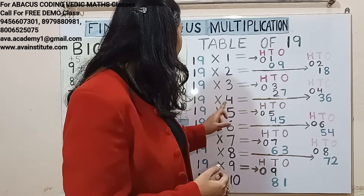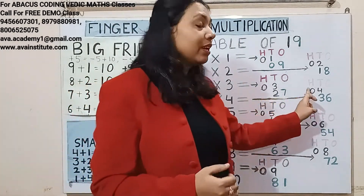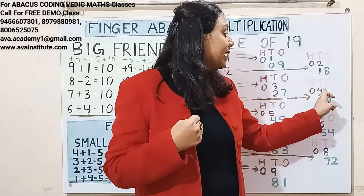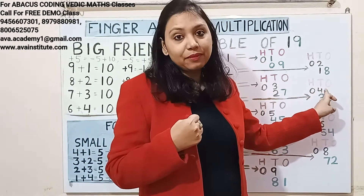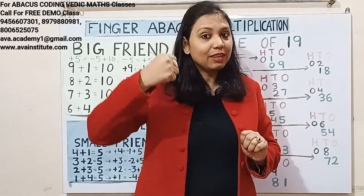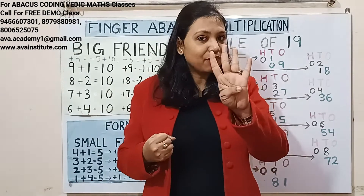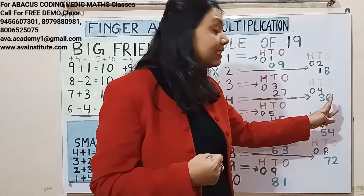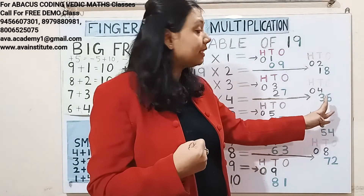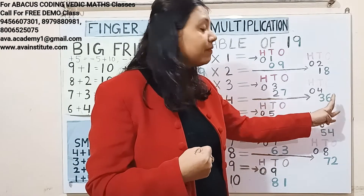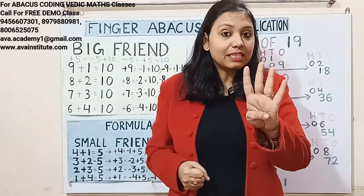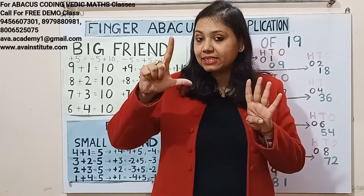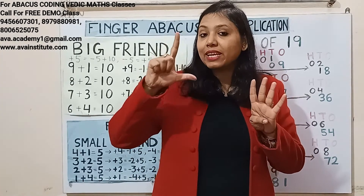Next, 19 fours are: 1 four is 4 — in hundreds we represent 0 and in tens we represent 4. 9 fours are 36 — in tens we represent 30 and in ones we represent 6.